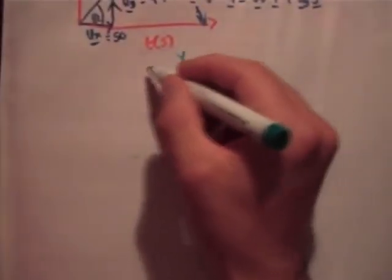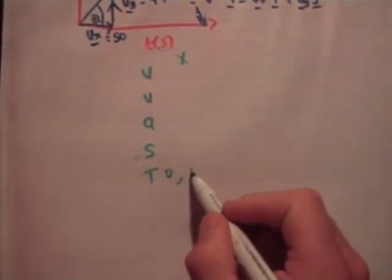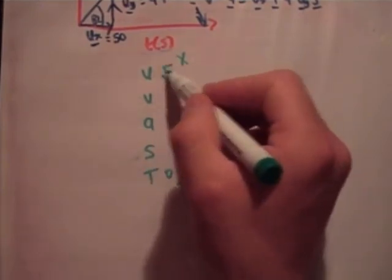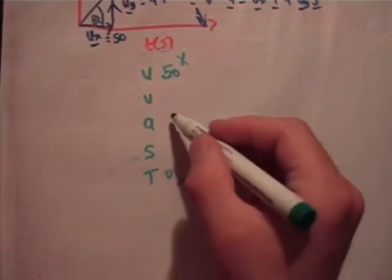So here's for the x-axis. We have u, v, a, s, t. So time, we'll say 0 and 10. The initial velocity is 50. The final velocity is unknown. The acceleration is 0.